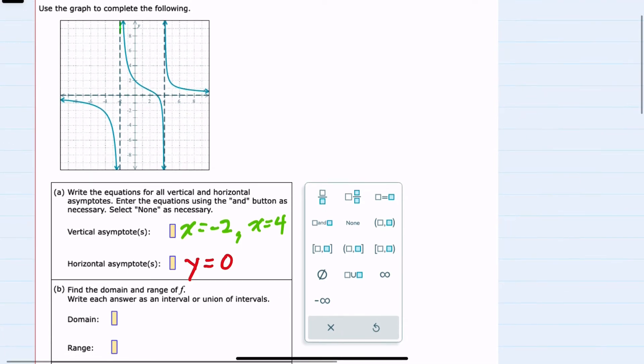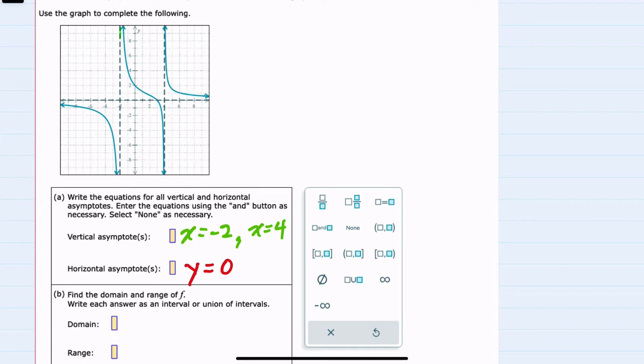Next we're asked for domain and range as either intervals or unions of intervals. And so looking at the domain, the domain is all of our possible x values.